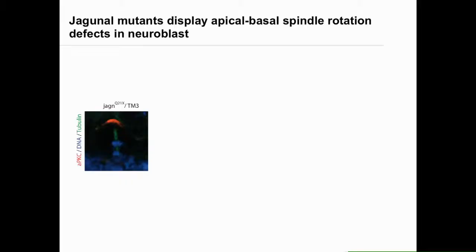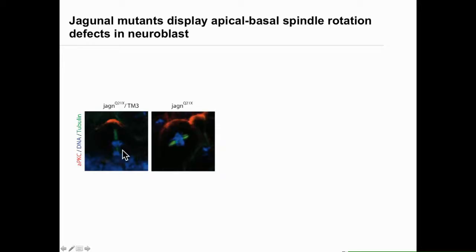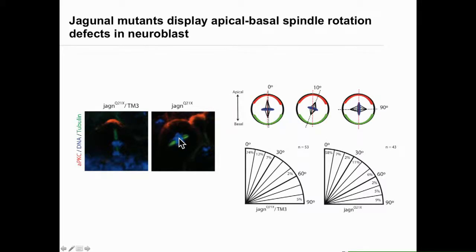A question is: do we have defects now in neuroblast divisions — those asymmetric divisions? We looked at the apical-basal alignment. Typical defects are spindle rotation defects along this apical-basal alignment after delamination. You can see that with an apical marker the spindle aligns along the apical-basal axis normally. In Jaganol mutants, we see a pleiotropy of defects — alignment is sometimes apical-basal, sometimes perpendicular, sometimes at a 45-degree angle. Measuring the angle of incidence in Jaganol mutants reveals a spread of spindle rotation defects.